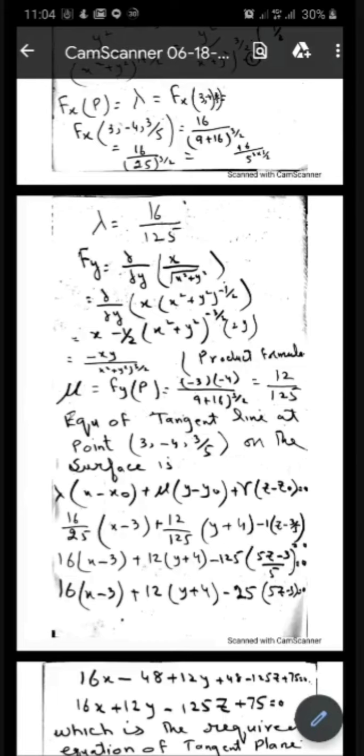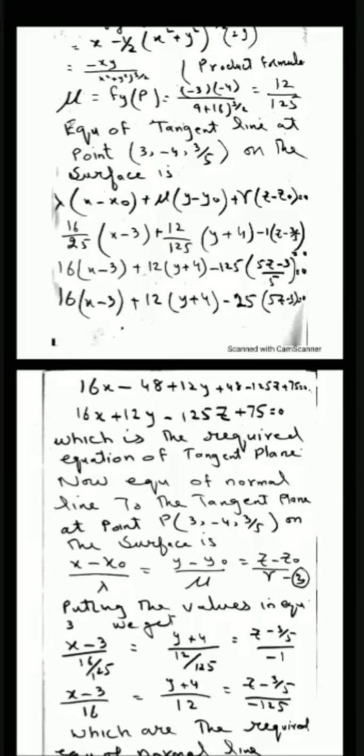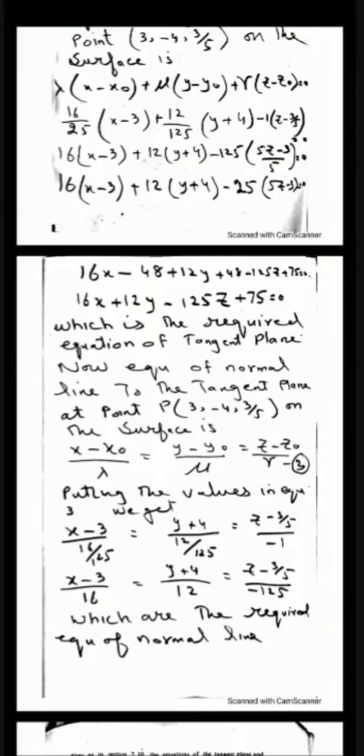To find the equation of the normal line to the tangent plane at point (3, -4, 3/5), the formula is: (x - x₀)/λ = (y - y₀)/μ = (z - z₀)/μ. Substituting x₀ = 3, y₀ = -4, z₀ = 3/5, λ = 16/125, μ = -12/125, the required equation is: (x-3)/(16/125) = (y+4)/(12/125) = (z - 3/5)/(-1), which simplifies to (x-3)/16 = (y+4)/12 = (z-3/5)/(-125). This is the required equation of the normal line.